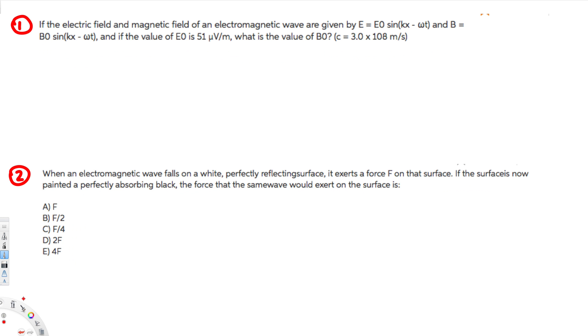Hey, what's going on guys, let's do this problem right here. This question is asking if the electric field and magnetic field of an electromagnetic wave are given by E equals E naught sine kx minus omega t.